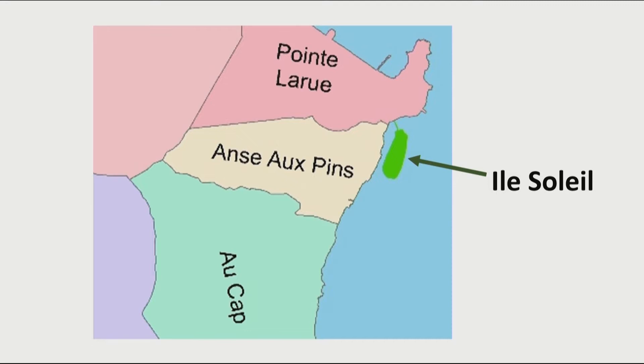And we have those islands on the map. Further south, we have Île Soleil. And next to Praslin, Eve Island.